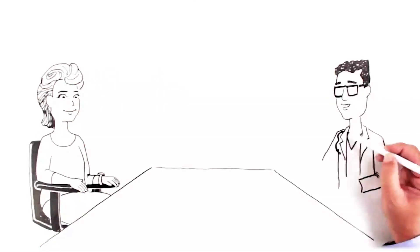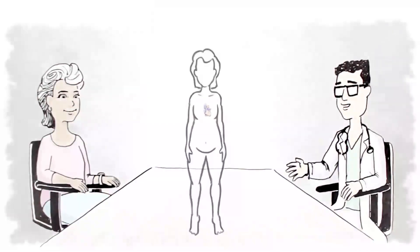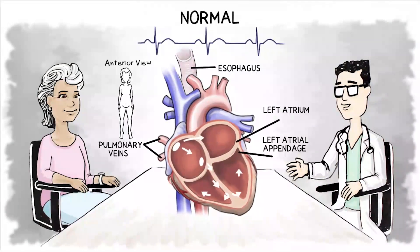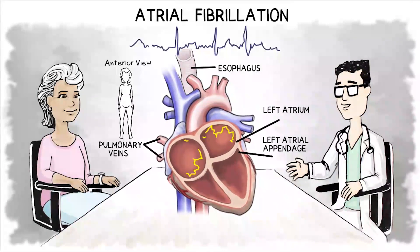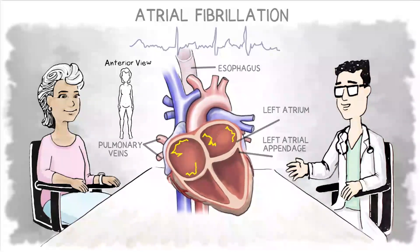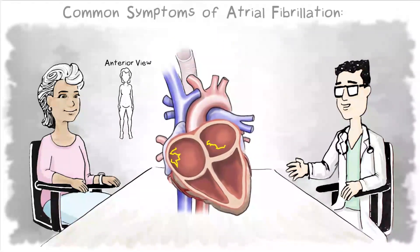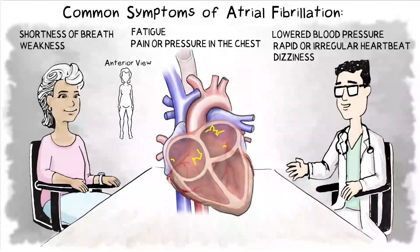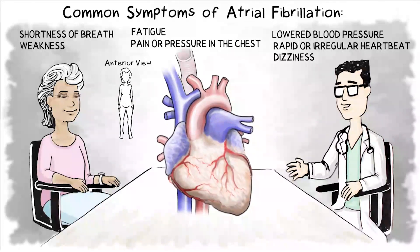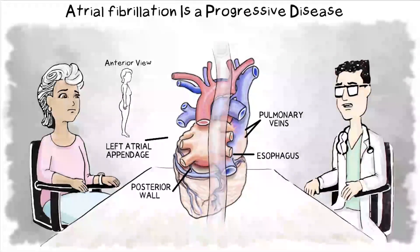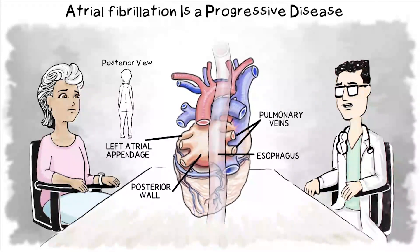Margaret has atrial fibrillation, or AF — an abnormal heart rhythm caused by erratic electrical signals. It is the most common type of abnormal heart rhythm. Atrial fibrillation is projected to occur in 8 million people in the US and about 33 million people worldwide. Unfortunately, it is often undiagnosed and undertreated.